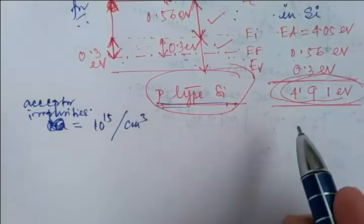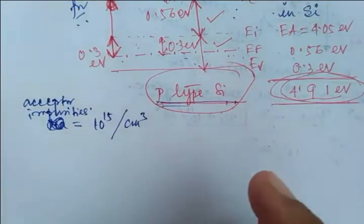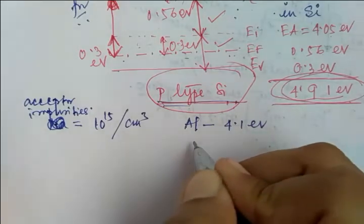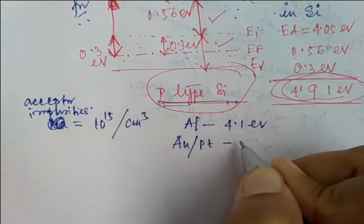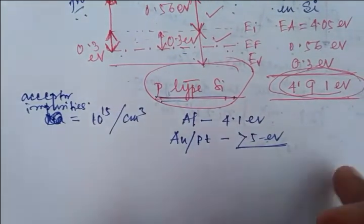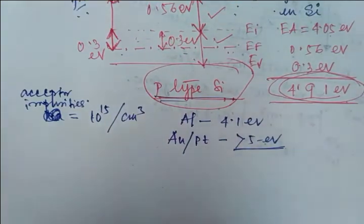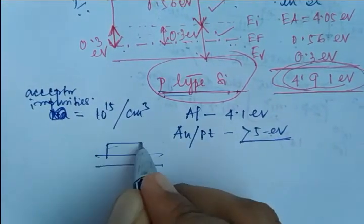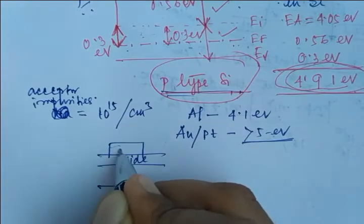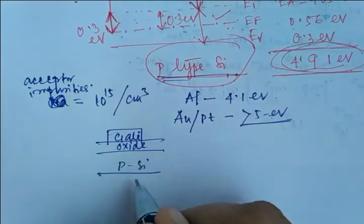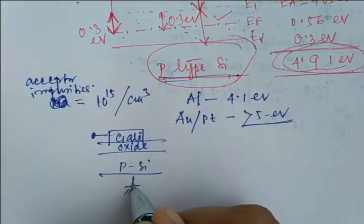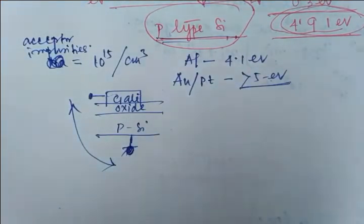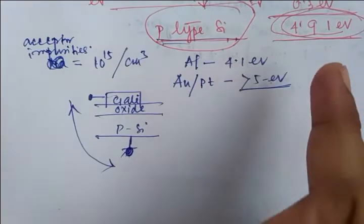Different metals have different work functions. For aluminium it is 4.1 electron volts; for gold and platinum it is greater than 5 electron volts. The MOS structure is a two-terminal device: the gate, the oxide, and the p-type silicon substrate. Both terminals should have equal work function; otherwise the device cannot be stabilized or saturated.